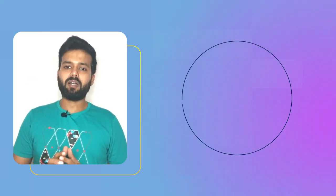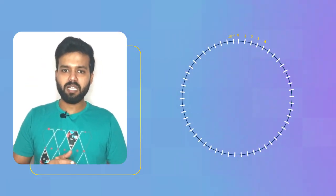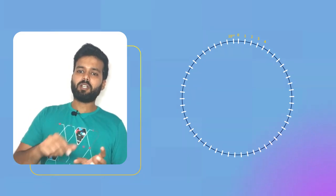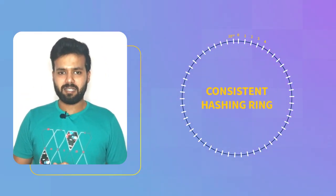To understand the solution, let's visualize a circle with marking 0 to a very large number, let's say 10 to the power 80. And we'll call this particular ring or circle as a consistent hashing ring.